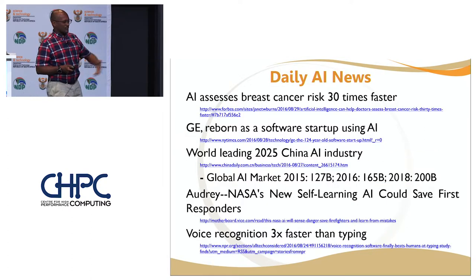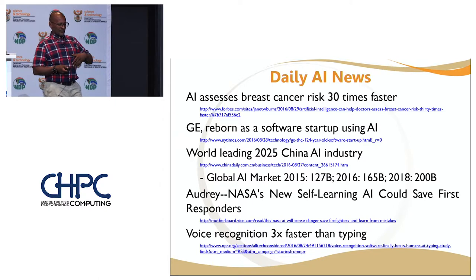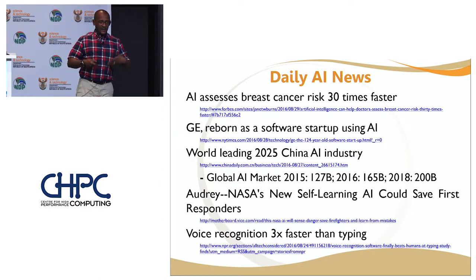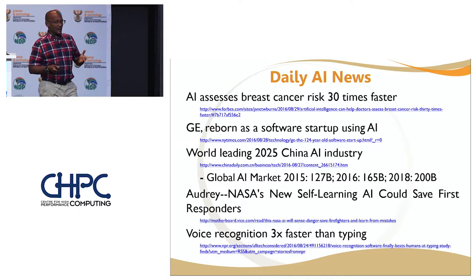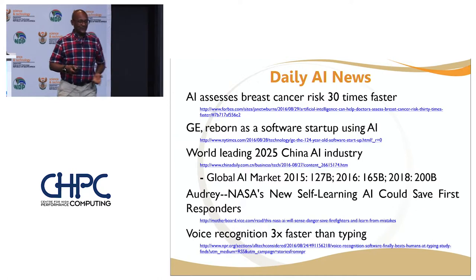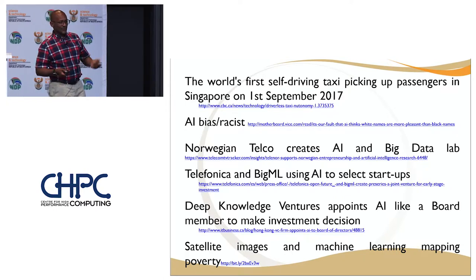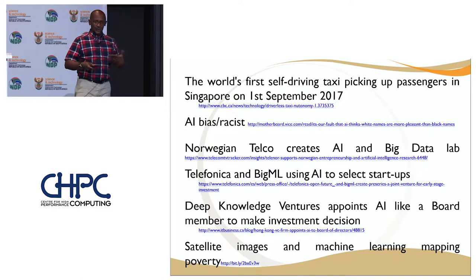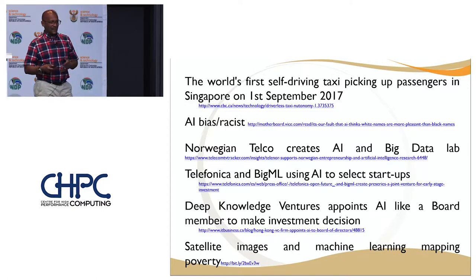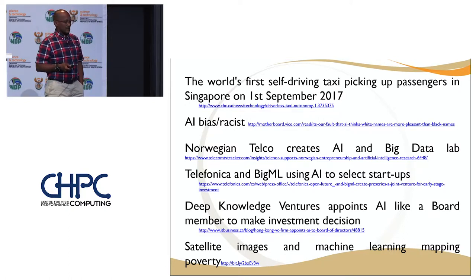AI is making real headlines. We can now assess breast cancer 30 times faster than before — that's AI. Voice recognition is three times faster than typing. Self-driving cars — yes, one knocked someone down in America, but we'll improve on that. Maybe in five years time, cars won't be knocking people down. There are quite a number of things making headlines in terms of AI.